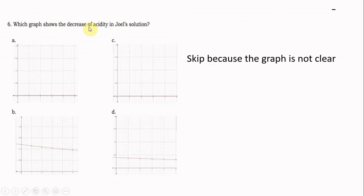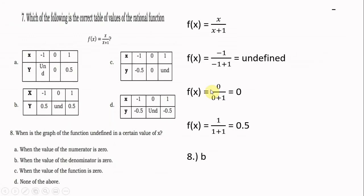Number 6 asks which graph shows the decrease of acidity in the solution. However, the graph is not clear, so we will skip this one.